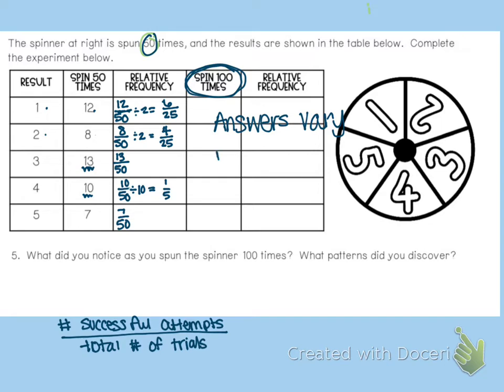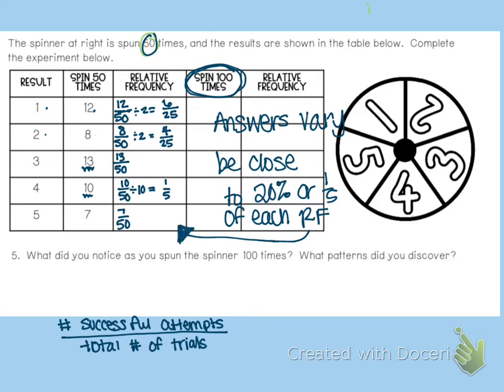But they should be close to 20%. 20% or 1/5 of each relative frequency over here, just so you know. So this time, go ahead and take your 100 spins. And this is how many times it landed on each number. And then these are your ratios of relative frequency that we just did with 50. And then press pause and go to get that done and press play when you have finished. You will also need to answer number 5 on this.